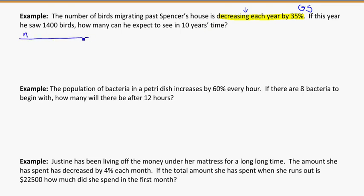So 1 being this year, he's got 1,400 birds. And I want to see in 10 years' time, out to 10, how many birds is he going to see? So that would be T sub 10. In the 10th term, what's going to be the value? So my initial value here, A is going to be equal to 1,400, because that's for the first year.